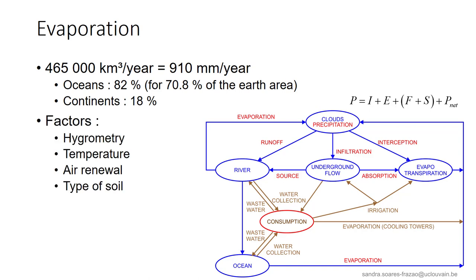Different factors listed here affect the potential evaporation of a region. Hygrometry represents the air moisture, so if the air is humid, already saturated with water, the potential for evaporation is low. The temperature also plays a role, as we have seen, that warm air can contain more water vapor than cold air. Air renewal is another factor affecting the potential evaporation, as winds can activate the evaporation process. This latter process is, in fact, the most efficient one for evaporation.